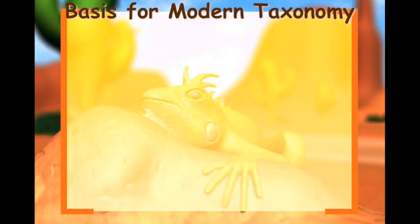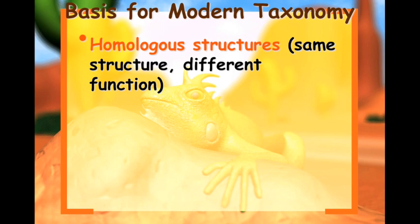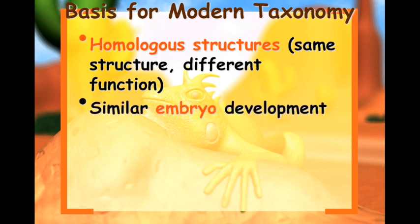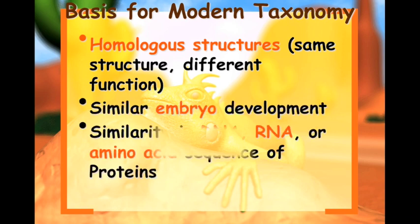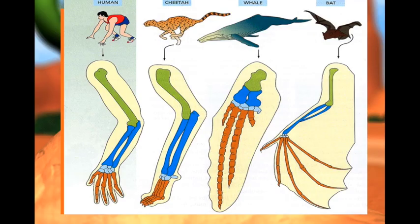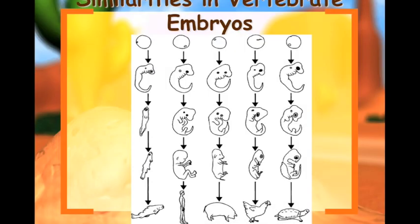The basis for modern taxonomy includes homologous structures — same structure, different function — similar embryo development, and similarities in DNA, RNA, or amino acid sequence. Homologous structures show the same basic structures just used for different functions. Embryology shows we all start off at very similar stages of life, and as we start to develop, we differentiate into different organisms.